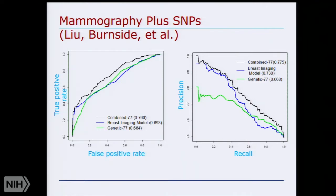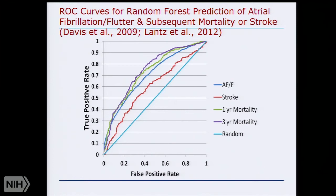Another task we looked at with Marshfield collaborators was predicting atrial fibrillation — a task I was especially excited about. Fortunately I converted back to a normal cardiac rhythm after about 24 hours, but for people who don't convert back, they remain at elevated risk of stroke and other mortality. For AFib, the area under the curve is above 0.7. In this operating region, you're getting a third of the AFib cases with very few false positives. If the intervention is something simple like taking aspirin or dropping caffeine or lowering your schedule, the model might already be useful.